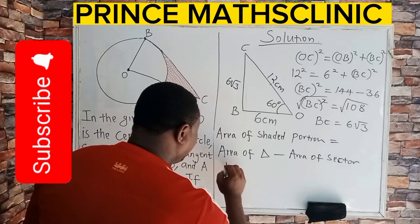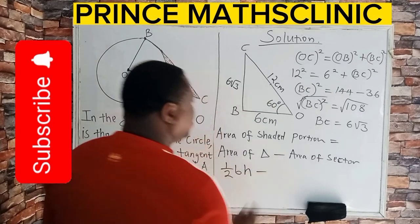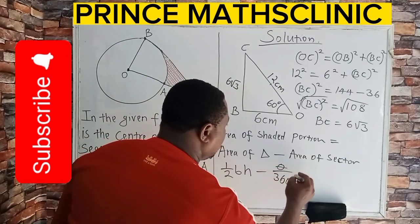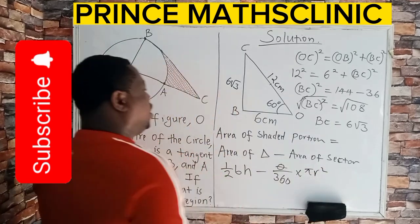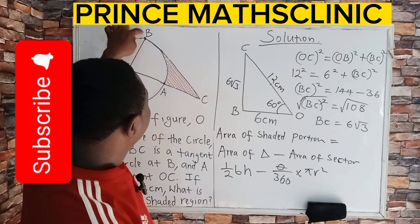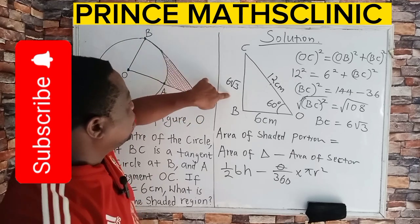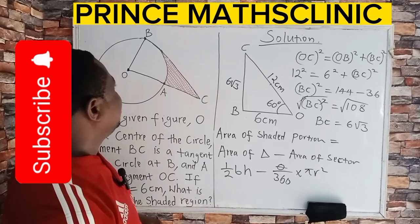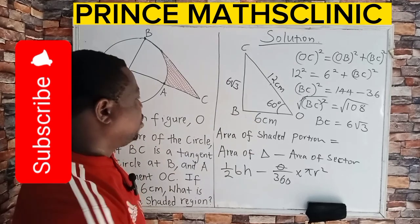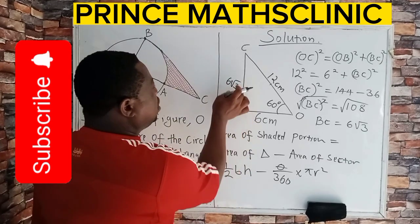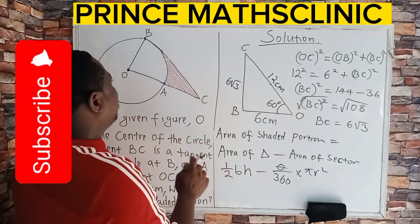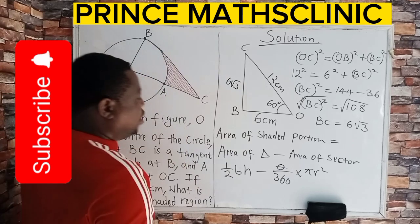So therefore, area of shaded portion equals the area of the triangle minus the area of the sector. Now, what is the area of the triangle? Half times base times height. Then the area of the sector is theta over 360 times pi r squared. So let's apply this formula now. My height in this triangle is BC, that's my height, that is 6 root 3. Then what is my base? My base in this triangle is OB, which is 6. This still remains the hypotenuse because it's facing angle 90 degrees.